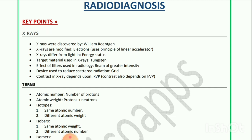The device used to reduce scattered radiation is a grid. Contrast in x-ray depends upon kVp.